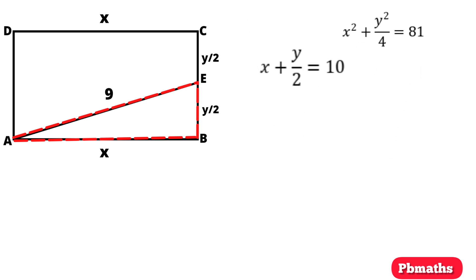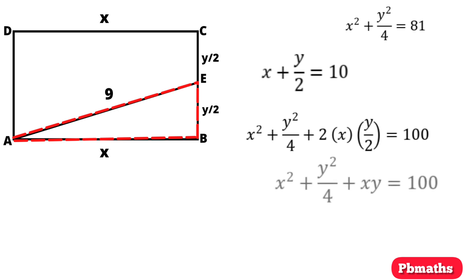On the other hand, in equation 1 we have X plus Y by 2 equals 10. Let's square on both sides. By squaring on both sides, we have X square plus Y square by 4 plus 2 times of X into Y by 2 equals 100. Then X square plus Y square by 4 plus XY equals 100.